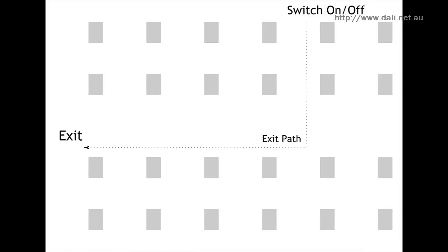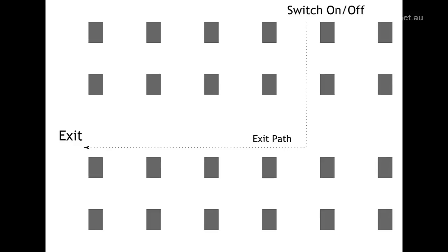Now I want to show you how to change and set up the fade time. Here's a made-up example: there's a room, it's all one DALI group, and there's a switch on the wall. For whatever reason the exit isn't near where the switch is, so they have to turn the switch off, the lights turn off, and then they have to walk out through the exit.